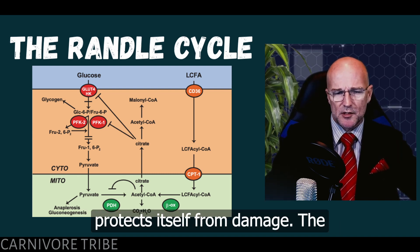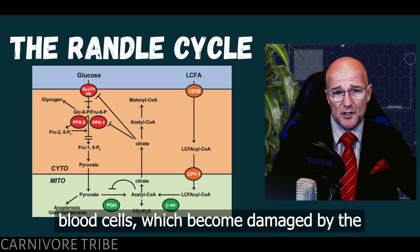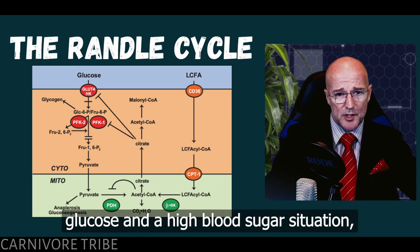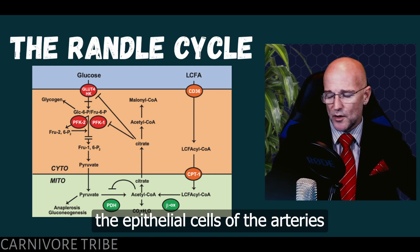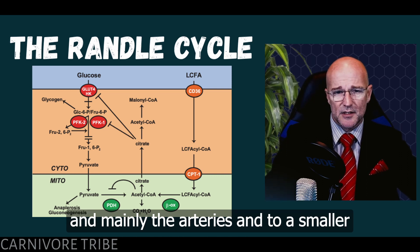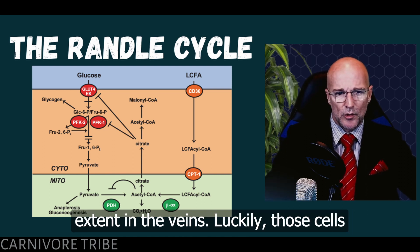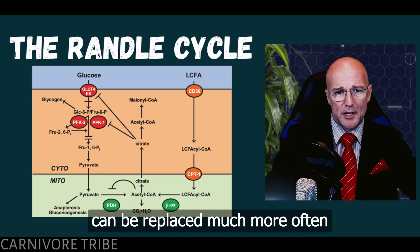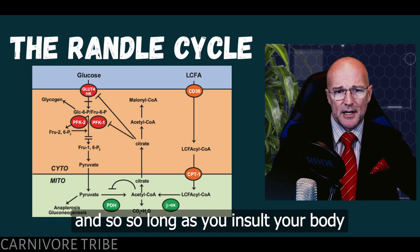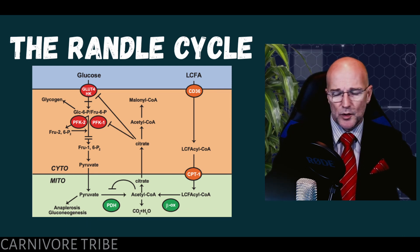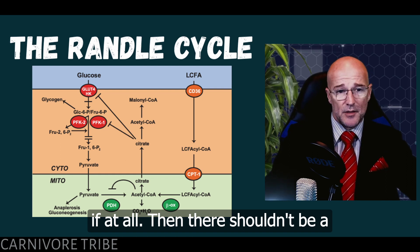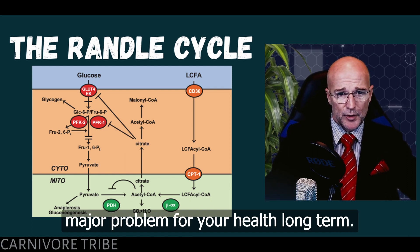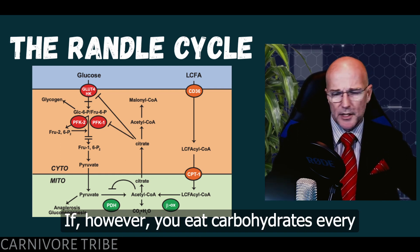It's actually a mechanism by which the body protects itself from damage. The sacrificial lamb in this case is the red blood cells, which become damaged by glucose in a high blood sugar situation, and the cells lining the vascular tree — the epithelial cells of the arteries and veins. So long as you insult your body with carbohydrate intake rarely or not at all, that shouldn't be a major long-term health problem.